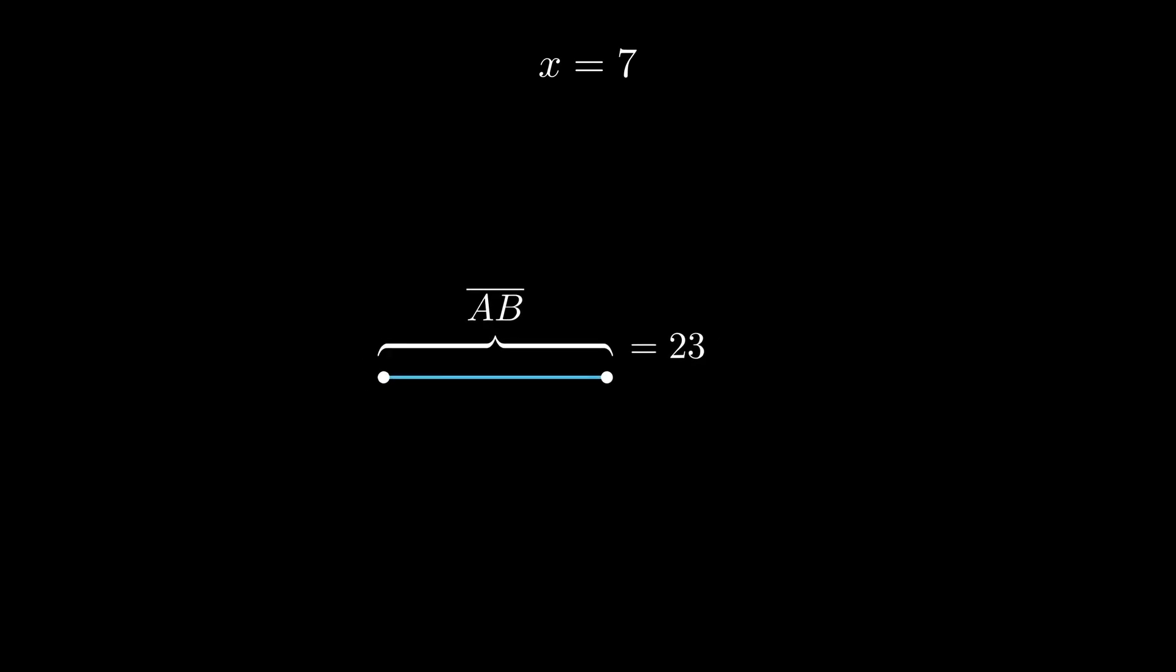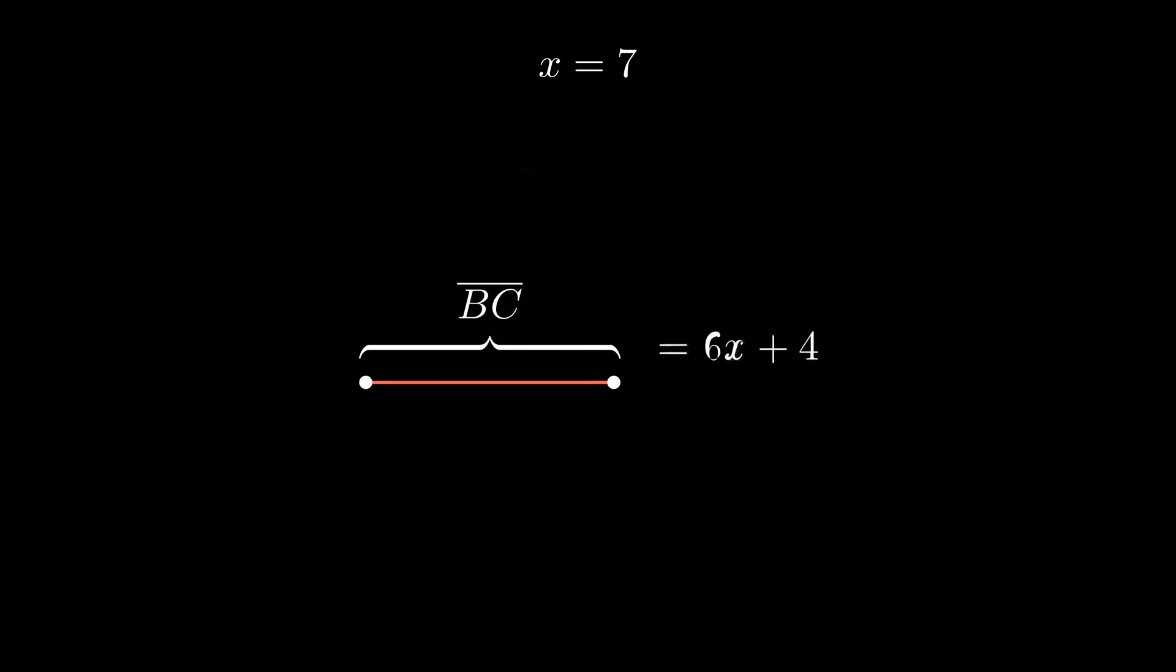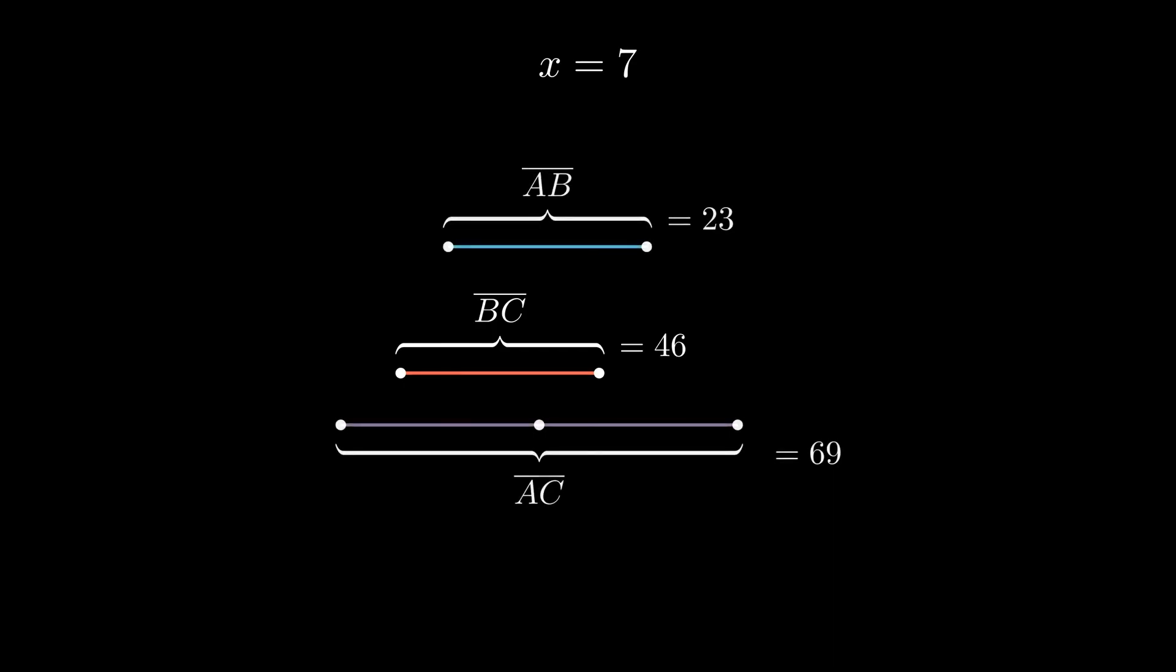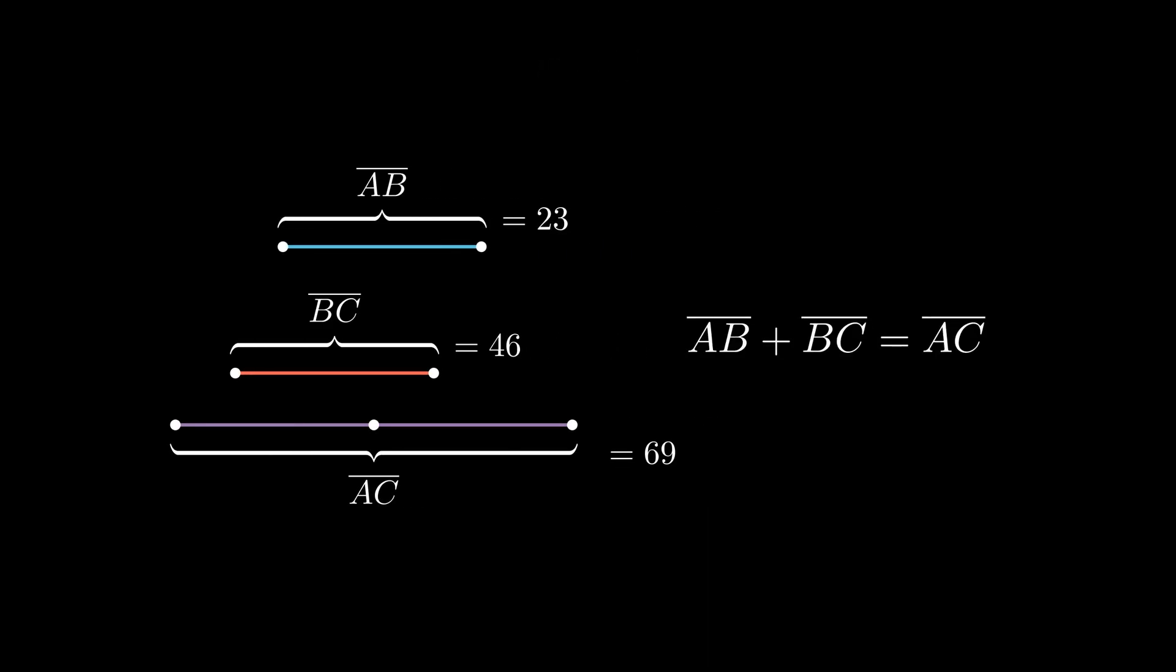Same idea for line segment BC. Simplify and we get BC equals 46. To double check our work, let's add both line segments and we should get the total length of the line segment 69. Great, that's correct.